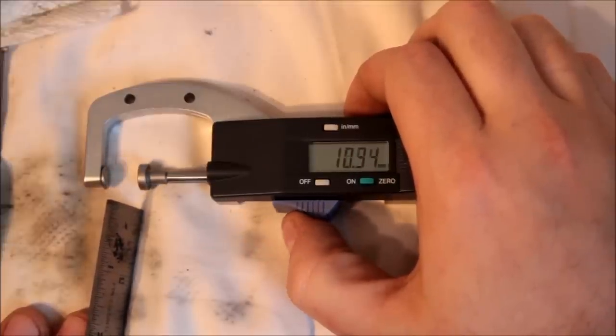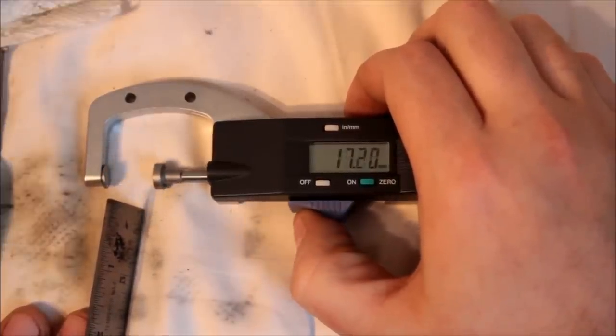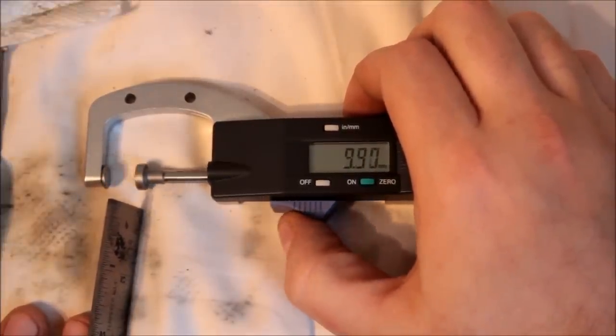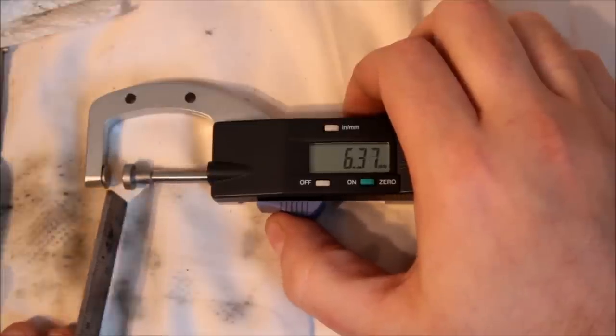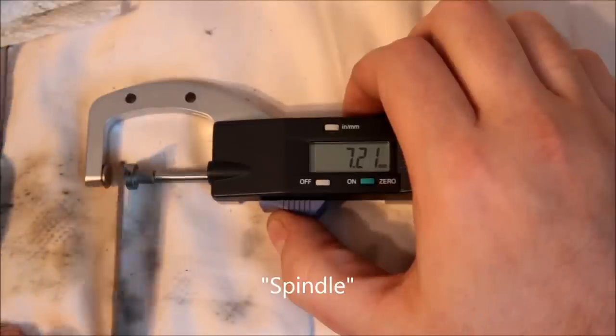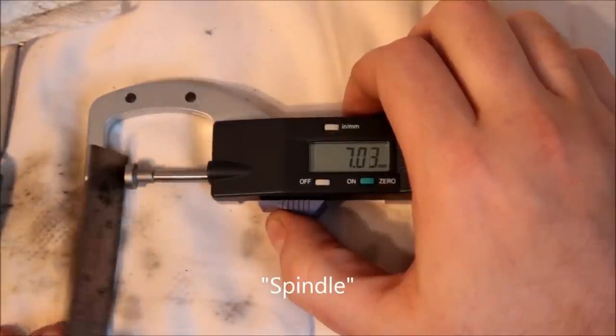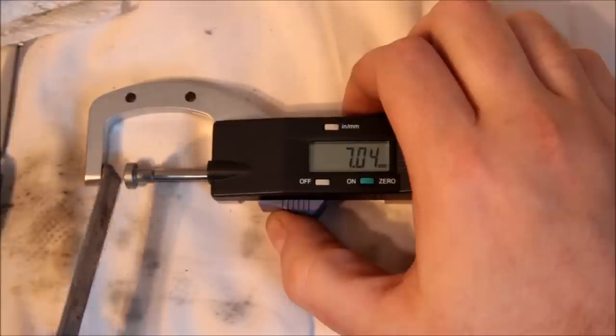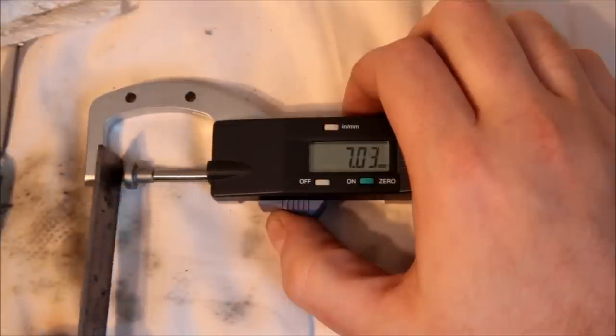So it works just like a regular micrometer, except it has this spring-loaded anvil. No, that's the anvil, spring-loaded plunger, I guess, stem. I'm not good with the terminology. And I believe both of these faces are either carbide or some kind of hardened steel.